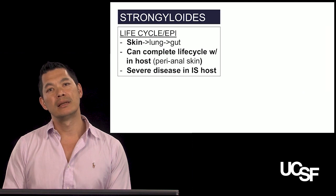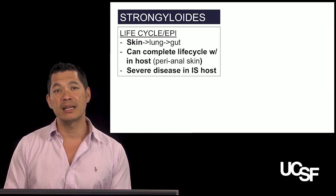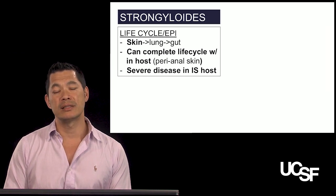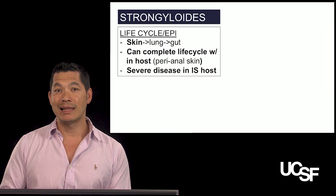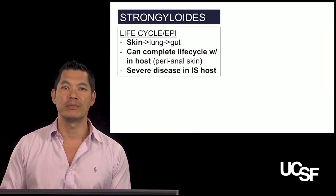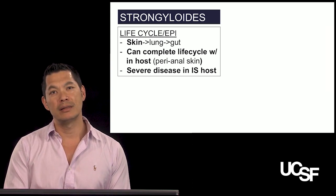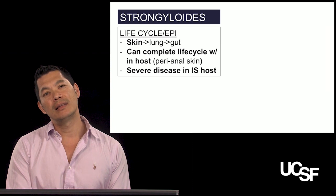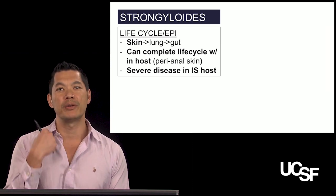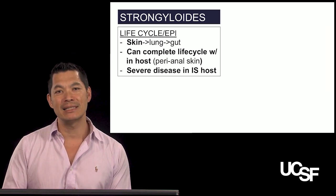This is strongyloides. Like hookworm, it comes in through the skin — you walk around contaminated soil, strongyloides gets in, and like hookworm and ascaris, it loves the lung. It goes to the alveolar area, up the bronchial tree, up the trachea, and you swallow it. The larvae mature into adult worms, which lay eggs.